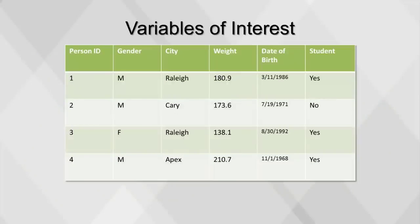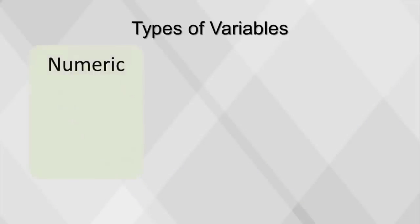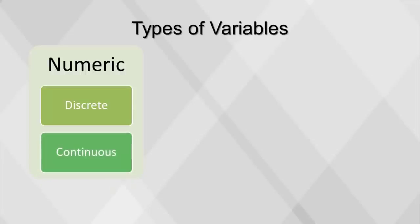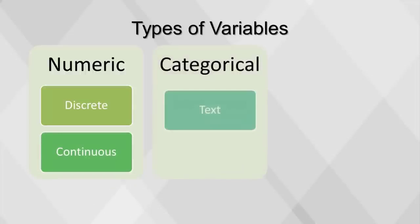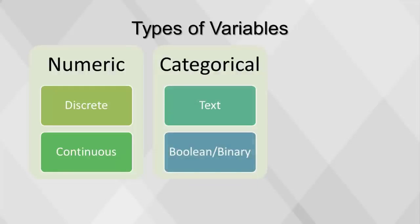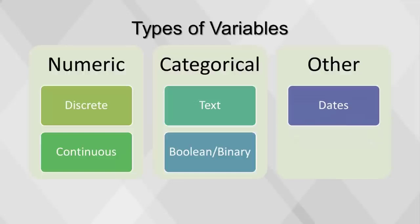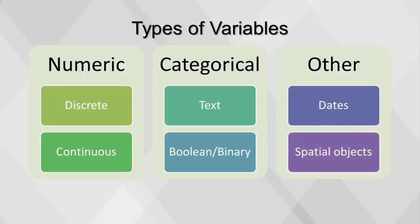Once the variables of interest have been selected, they can be renamed if needed and assigned the proper data type. There are two common variable types: numeric and categorical. Numeric variables include discrete variables, which can include whole numbers used for counting and IDs that represent a unique entity, and continuous variables, which are numbers with decimals used for measuring. Categorical variables include text, which is any combination of letters, numbers, and symbols in strings or characters, and boolean or binary variables, which contain only one of two possible values. Variables that can be treated as either numeric or categorical include dates and spatial objects, which show location such as latitude and longitude.